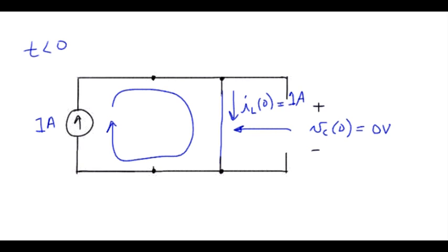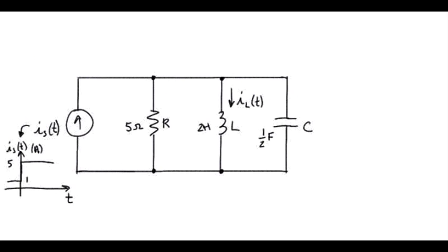Let's go ahead and pull up the original circuit and start in on converting that to the S domain. So we say for T greater than 0, the source looks like this value, 5 amps. Since this current is just a constant, that looks like the value of the current source divided by S when we convert that to the S domain.